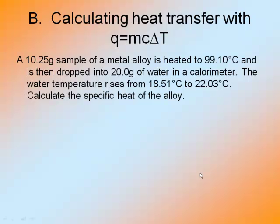A 10.25 gram sample of a metal alloy is heated to 99.10 degrees Celsius and is then dropped into 20 grams of water. So this thing is going to release heat. The water's temperature rises from 18.551 degrees Celsius to 22.03. Calculate the specific heat of the alloy. This is a little bit easier because you don't have to do the extra step of the final minus the initial, because you're going to do that earlier.